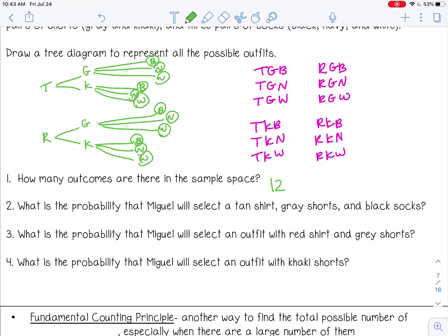So number 2. What is the probability that Miguel will select a tan shirt, gray shorts, and black socks? So I'm going to look at what I have written over here in pink. There's just one outfit with tan, gray, and black. So that would be 1 out of 12. And of course, we can change that to a decimal or a percent if we want. As a decimal, that would be 0.08 or about 8%. There's an 8% chance that he's going to choose that outfit.